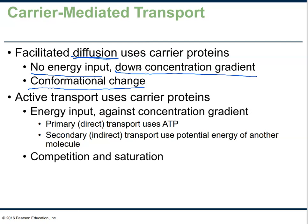You've still got to have those concentration gradients. In active transport, we also use carrier proteins, but now you need to use ATP because you don't need a concentration gradient. In fact, a lot of times you're going against a concentration gradient or building one up. In order to do that, you need to put in work, which requires the expenditure of ATP.